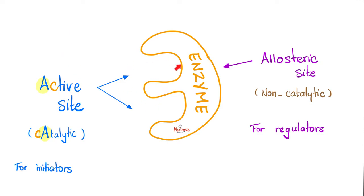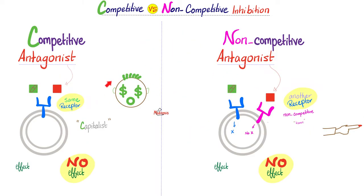Competitive inhibitors bind to the active site, while non-competitive inhibitors bind to the allosteric site. Competitive inhibitor Cody binds to the front door; non-competitive inhibitor Nancy binds to the back door. The binding of Cody is reversible — you can overcome it by adding more substrate, which is why Vmax does not change. But with Nancy, the binding is irreversible — no one can get rid of Karen — and that's why Vmax will drop like a rock.